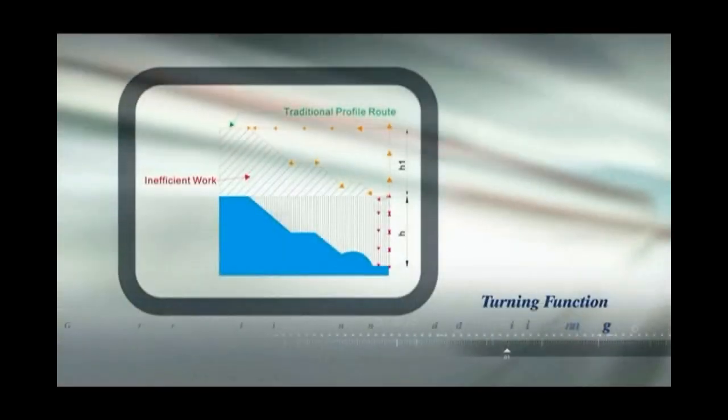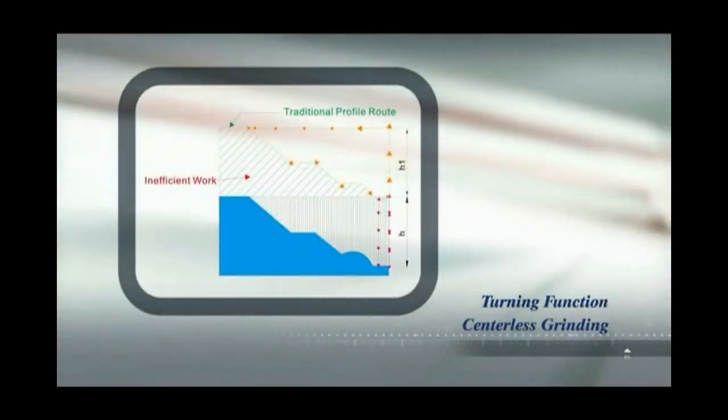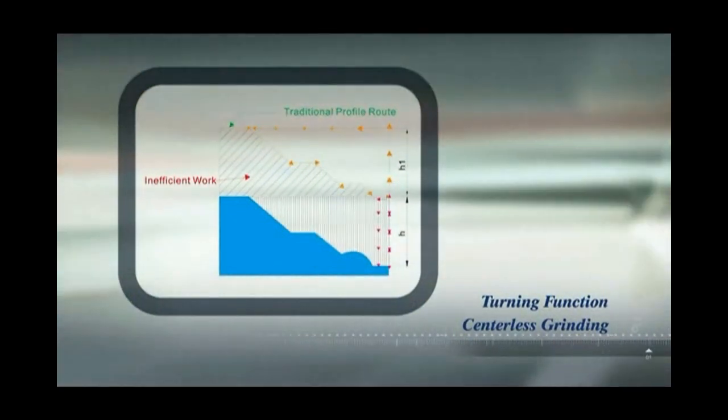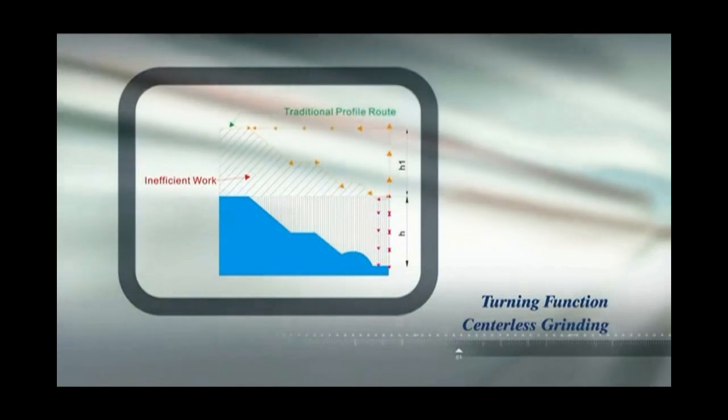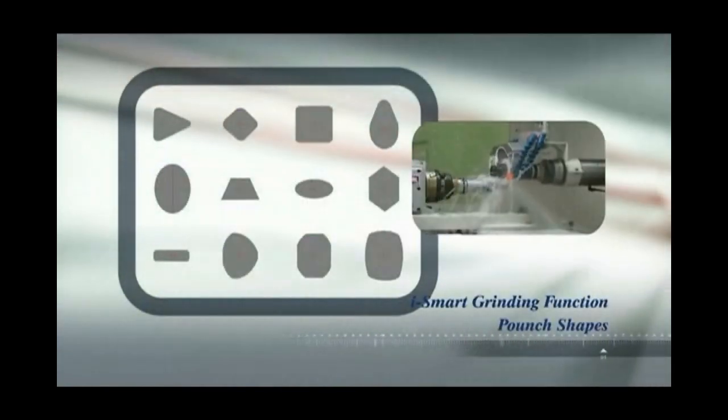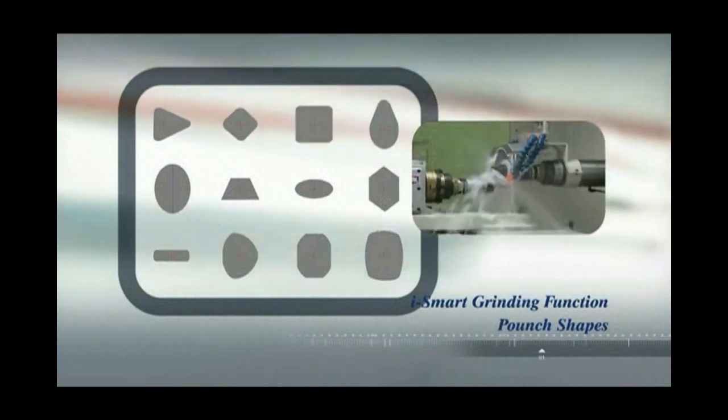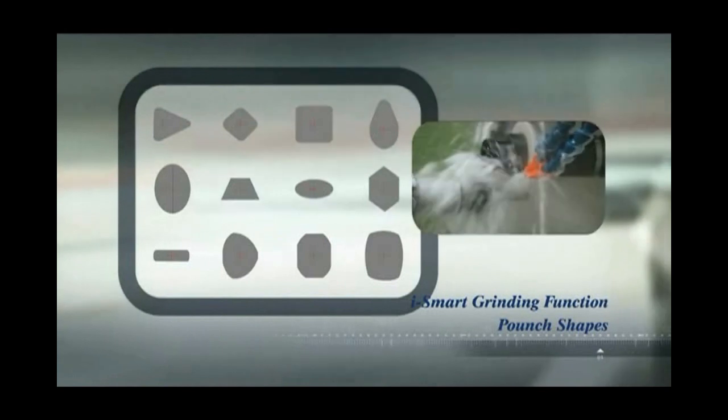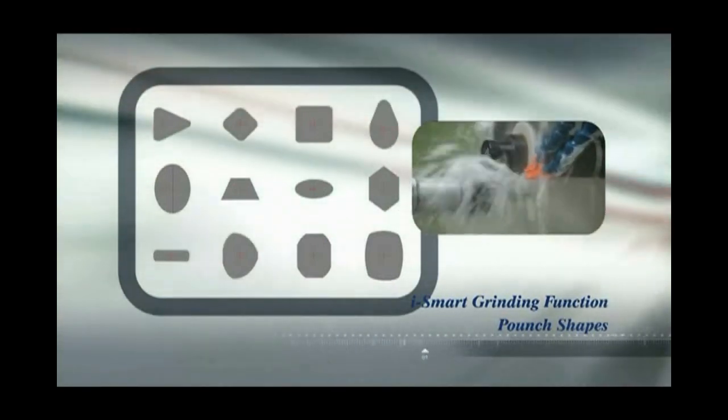The superb efficiency of the Smart grinder eliminates wasted cycle time just grinding air and makes sure that every cut counts to maximise your production rates. The iSmart function available on these machines also offers customers incredible flexibility by adding the ability to perform pole shape grinding of irregular shaped parts.